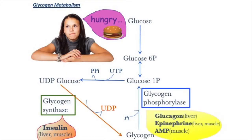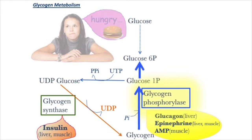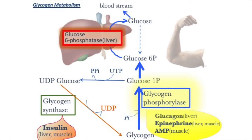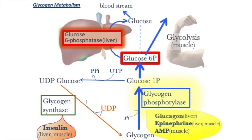When it is needed for energy, glucosidases break down and convert glucose in the liver. As muscle lacks glucose-6-phosphatase, which is required to pass glucose into the blood, the stored glycogen is available for internal use only and is not shared with other cells.